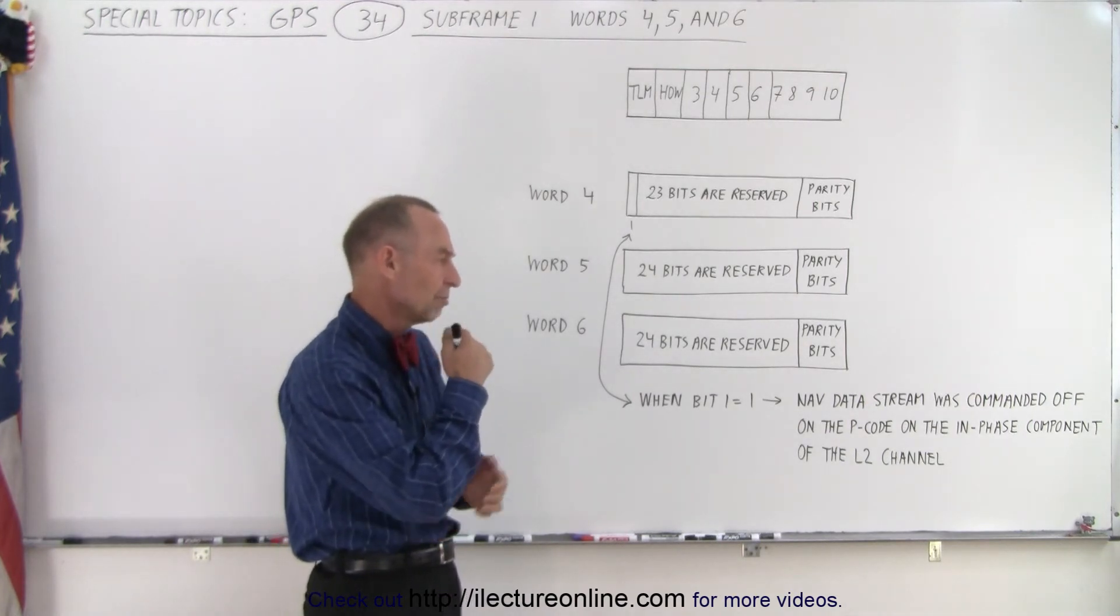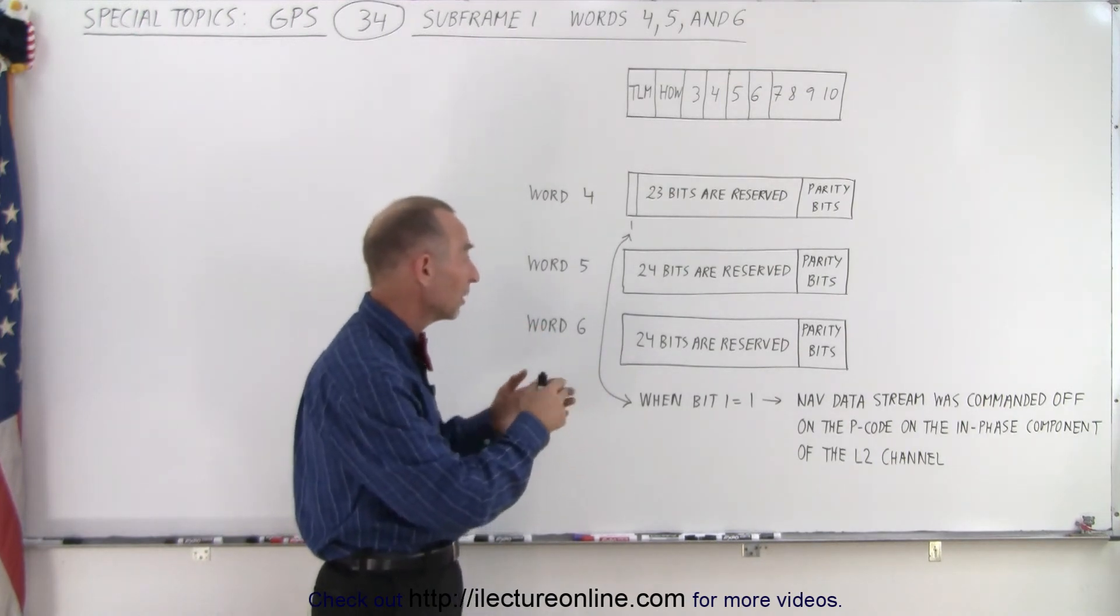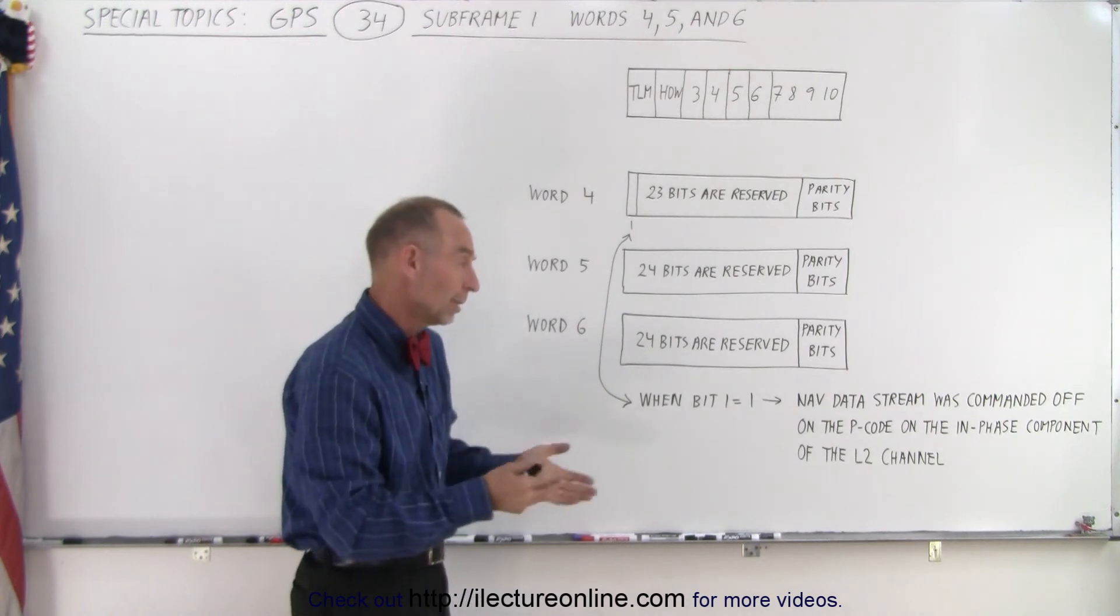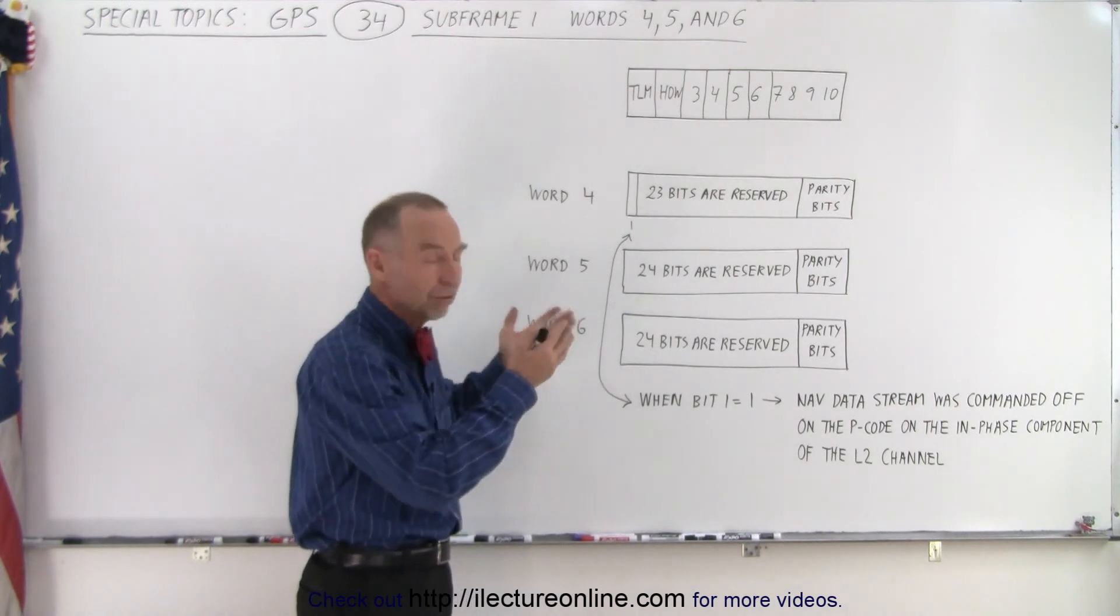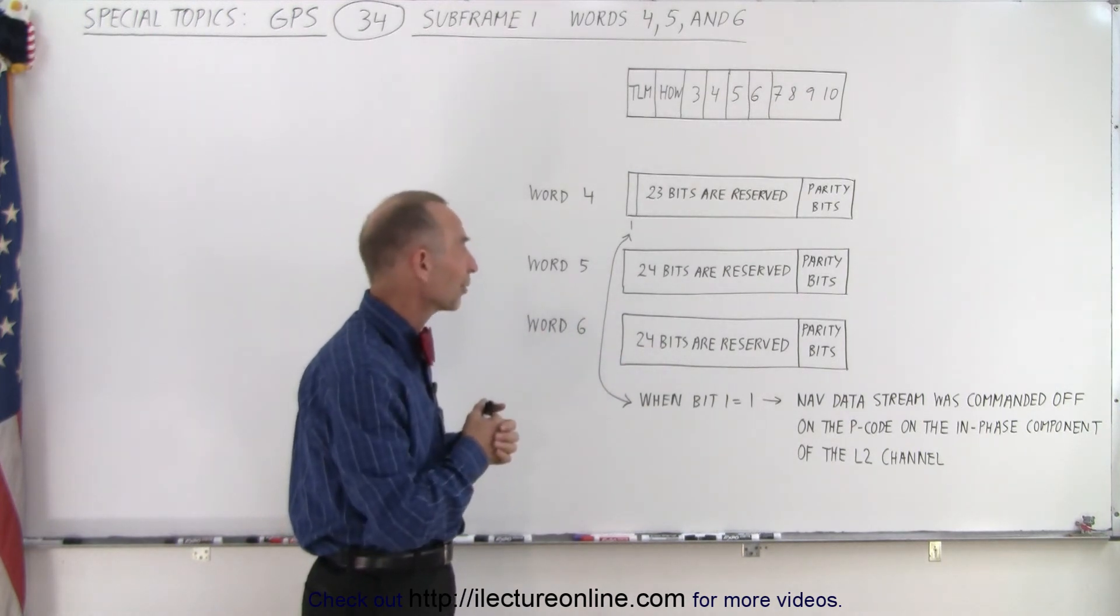So that means if that bit is set there's no P code in L2. If that bit is set to 0 then we know we get P code on L2 on the L2 channel. And so that is the only difference. Everything else is straightforward. We don't need to worry about it because it is not our concern.